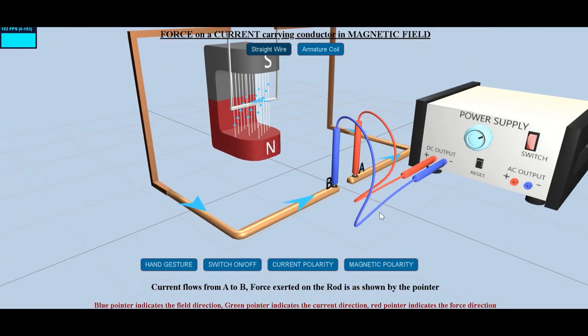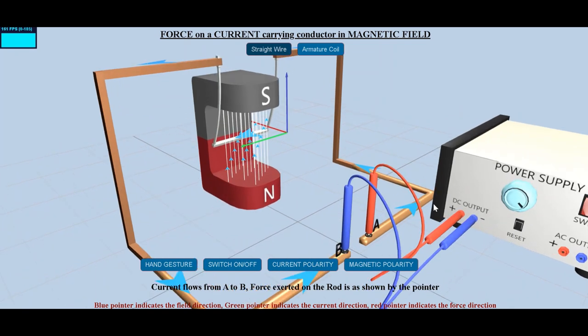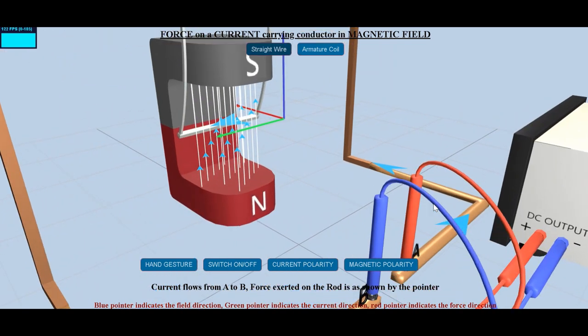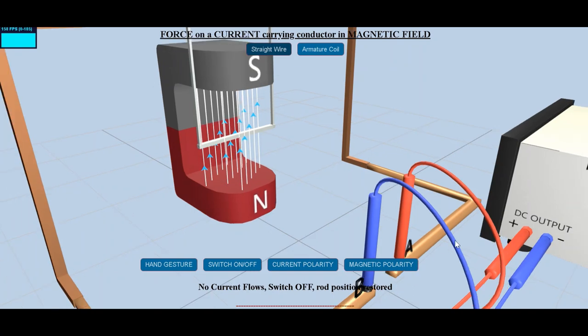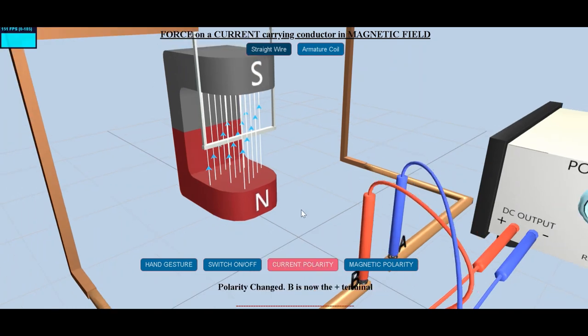When a conductor carrying current is placed in a uniform magnetic field, the conductor experiences a force. This happens because like poles of two magnets repel each other and unlike poles attract each other. The current flowing through the wire creates a magnetic field around it.